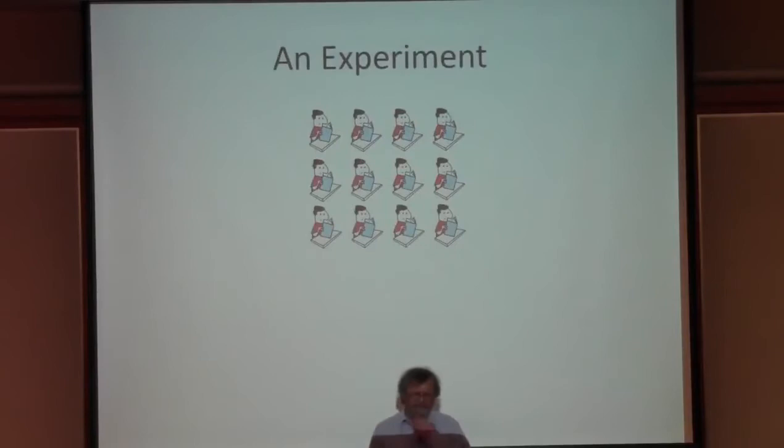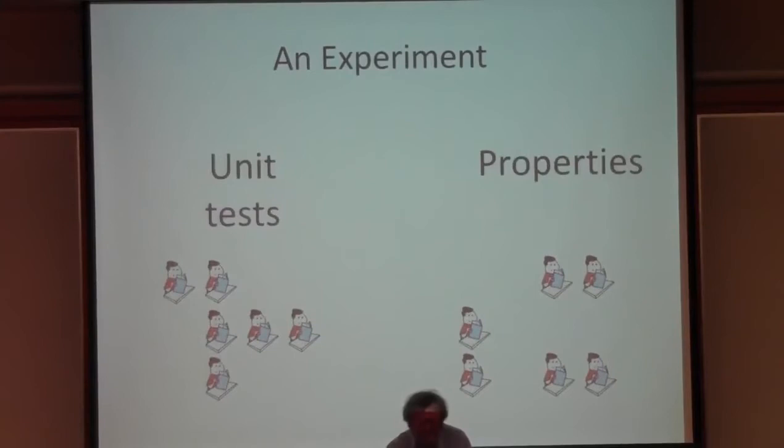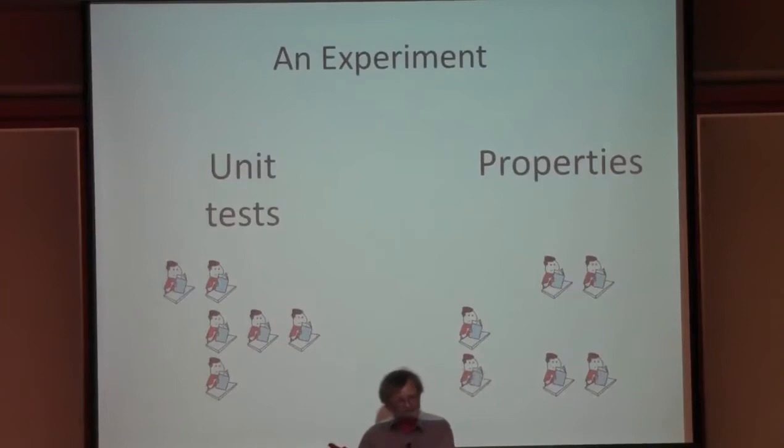A couple of years ago, we ran an experiment with a group of students - unfortunately only about this many; the more the better for statistically significant results. We divided them into two groups and asked each group to solve some programming problems: one group to write unit tests for their code, that is, single test cases, and the other group to write QuickCheck properties. So all students wrote test code for their solutions, but using two different techniques.